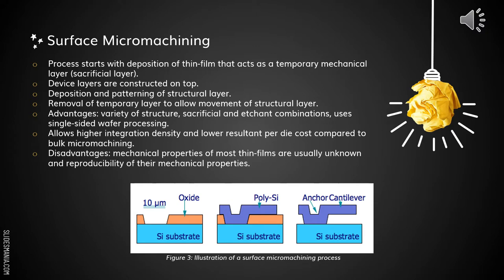The next fabrication method is surface micromachining. The process starts with deposition of a thin film that acts as the temporary mechanical layer, which is the sacrificial layer. Device layers are constructed on top, followed by deposition and patterning of the structural layer. It also requires removal of the temporary layer to allow movement of the structural layer. The advantage is the variety of structure and sacrificial layer combinations, single-sided wafer processing, and higher integration density with lower production costs compared to bulk micromachining. The disadvantage is that mechanical properties of most thin films are usually unknown and difficult to reproduce.